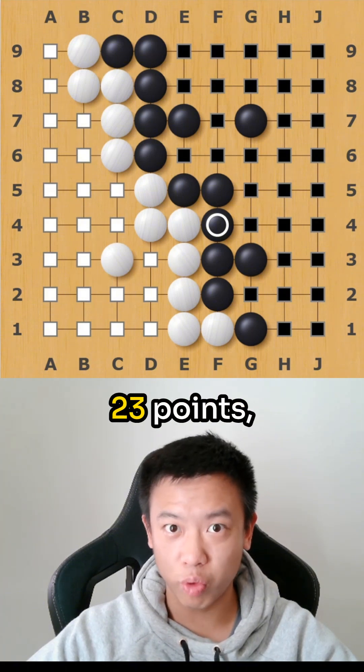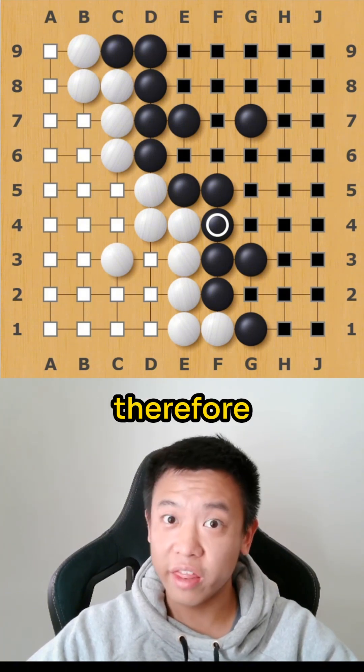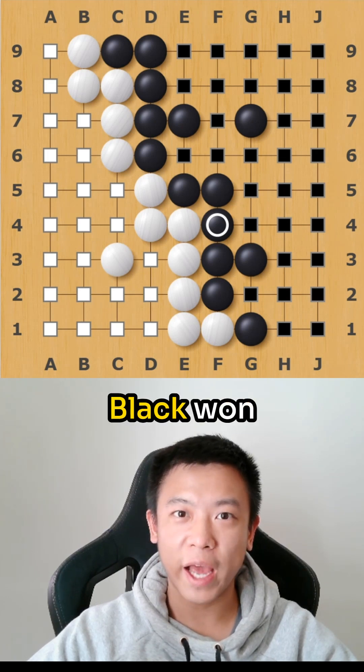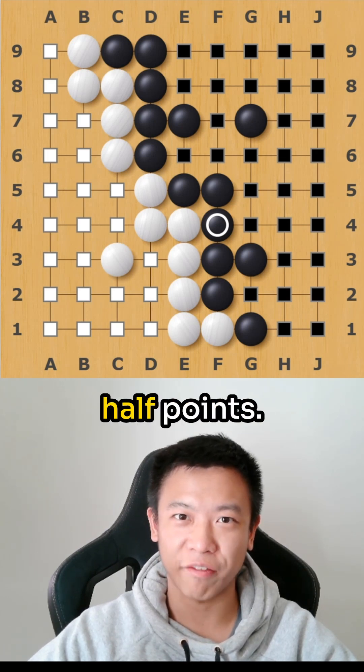Black has 31 points, White has 23 points, but Black played first. Therefore, White gets a 6.5 point compensation and in the end, Black won the game by 1.5 points.